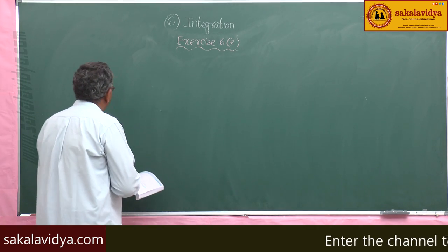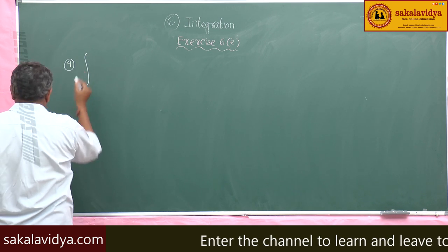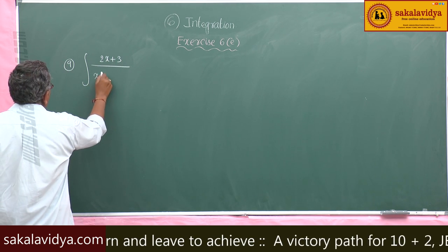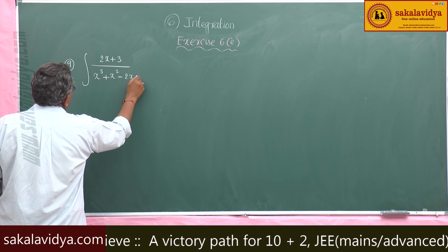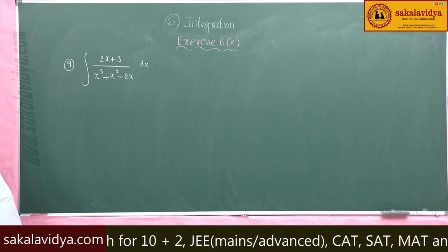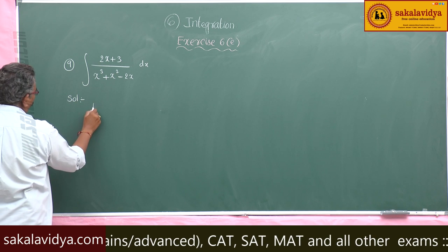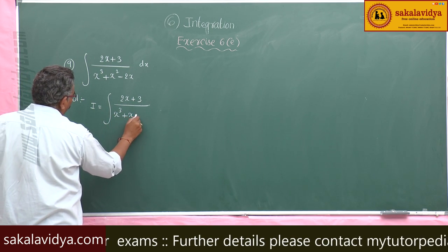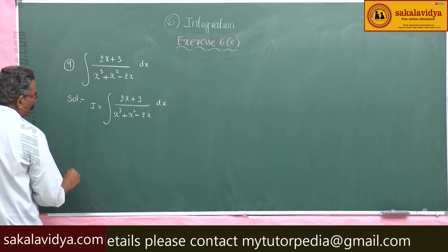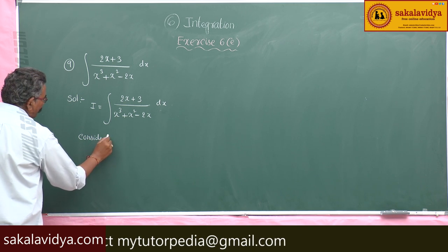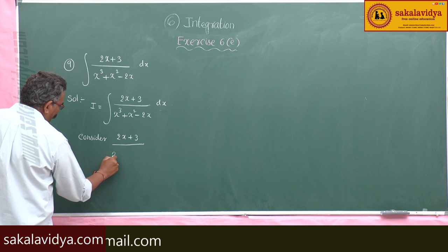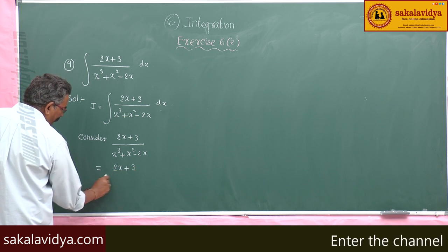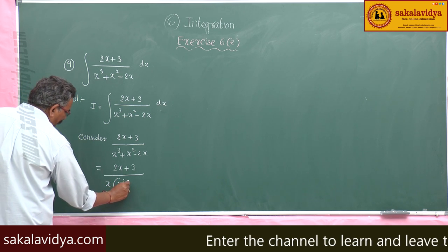Ninth problem: evaluate the integral of (2x + 3)/(x³ + x² - 2x) dx. So I is equal to the integral of (2x + 3)/(x³ + x² - 2x) dx. Consider (2x + 3) divided by x³ + x² - 2x. Take x common from the denominator: (2x + 3) divided by x(x² + x - 2).